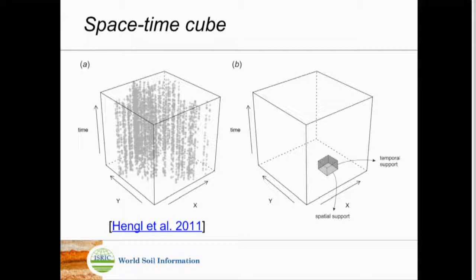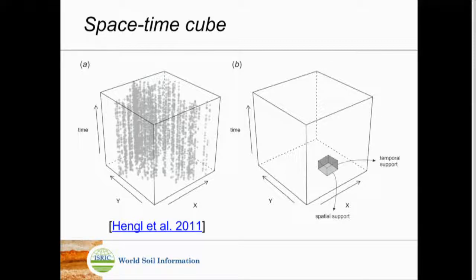The volume to which the measurement is referred is called the spatiotemporal support. It has two parts: the spatial support and the temporal support — the horizontal and vertical size of these cubes in the space-time representation.